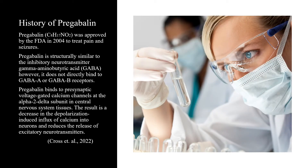Pregabalin was approved by the FDA in 2004 to treat pain and seizures. Pregabalin is structurally similar to the inhibitory neurotransmitter gamma-aminobutyric acid. However, it does not directly bind to GABA-A or GABA-B receptors. Pregabalin binds to presynaptic voltage-gated calcium channels at the alpha-2-delta subunit in the central nervous system tissues. The result is a decrease in the depolarization-induced influx of calcium into neurons and reduces the release of excitatory neurotransmitters.